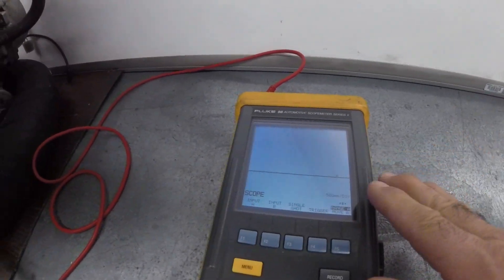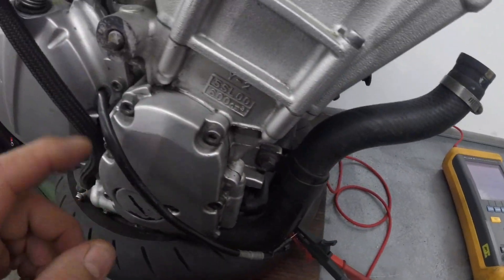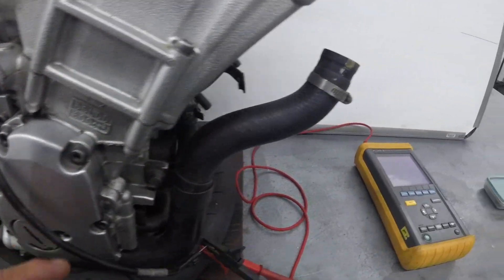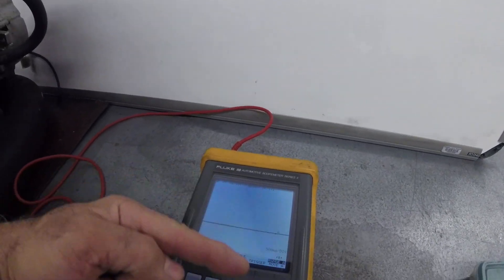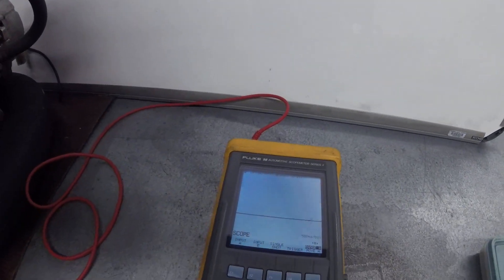So what I can see right now is that the sensor is reading the crankshaft. That's why I can see the waveform going up and down, and that's an AC waveform which is alternating current.